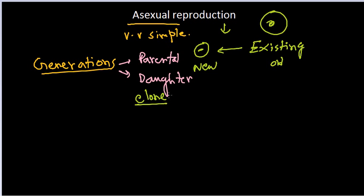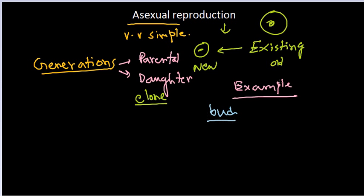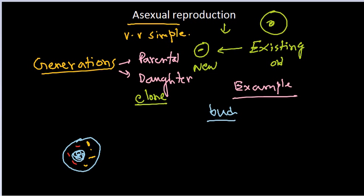Reproduction is one of the most important features of a living organism — for an organism to be considered living, it should reproduce. A simple example of asexual reproduction is budding in yeast. If you look at the structure of yeast, it contains a nucleus, cytoplasm, and other organelles inside. When the yeast cell wants to divide and give rise to a daughter cell, it undergoes a process called budding, forming a bud-like structure.